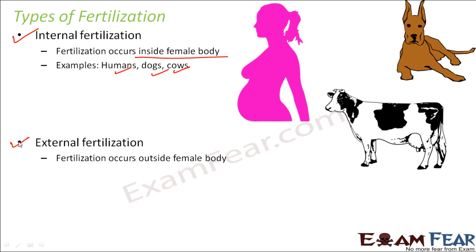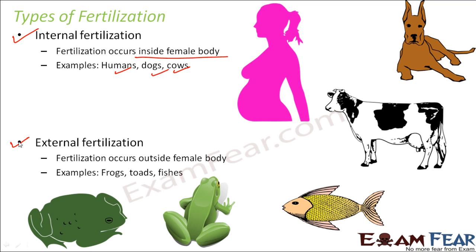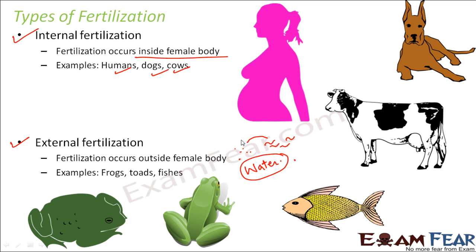In external fertilization, the fusion takes place outside the female body. The female releases its eggs outside the body, the male releases the sperm outside the body, and then somewhere in the external environment they both fuse together to form a new organism. Examples include frogs, toads, and fishes. In all of these, water acts as a medium where fertilization takes place — eggs are released into the water, sperms are also released into the water, and then they both meet and fuse together. Nothing happens inside the female body.